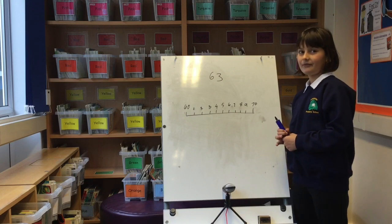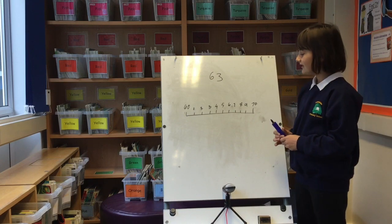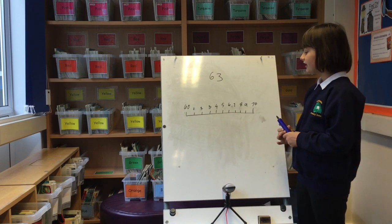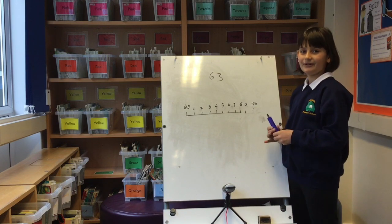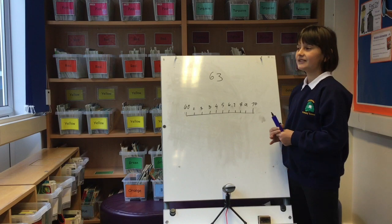63 is going to round down because any number that's below 5 is going to round down, and the answer is 60.